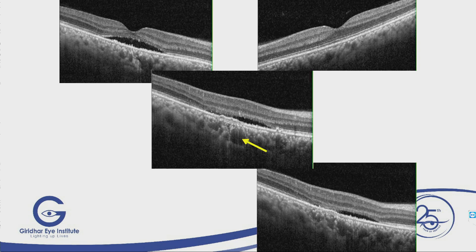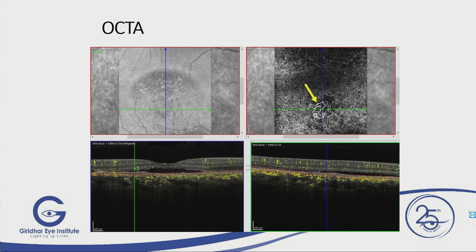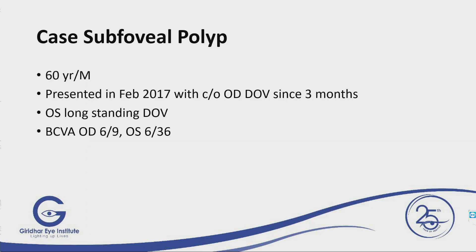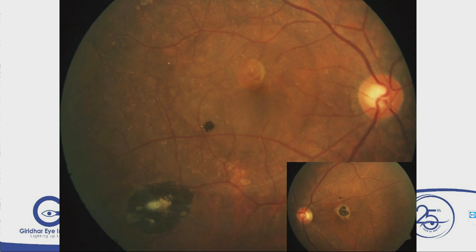This case shows a teardrop sign with fluid — the differential diagnosis is atypical CSCR or pachychoroid disease like PCN. On OCTA you can see a network in a vascular slab, meaning there is PCN. The difference is this may work with anti-VEGF — you can go for aflibercept or other anti-VEGF injections. This is another case of subfoveal polyp.